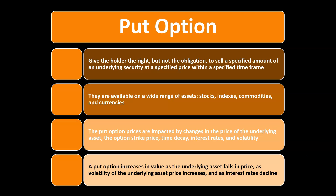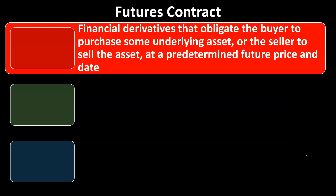A put option increases in value as the underlying asset falls in price, as volatility of the underlying asset price increases, and as interest rates decline.